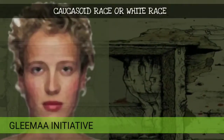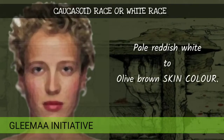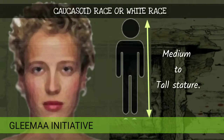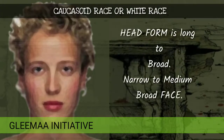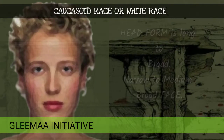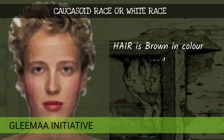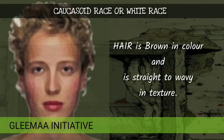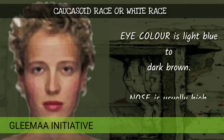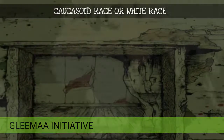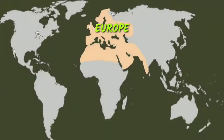Caucasoid race or white race: pale reddish white to olive brown skin color, medium to tall stature, head form is long to broad, narrow to medium broad face, hair is brown in color and straight to wavy in texture, eye color is light blue to dark brown, nose is usually high. They are found in Europe, parts of Africa and parts of Asia.